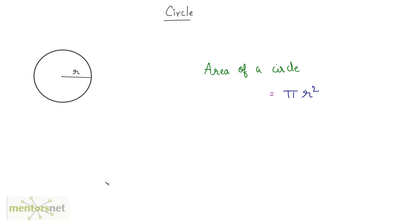So everybody knows the area of a circle and that's pi r square. Let us consider for simplicity purposes that the radius of this circle is 7 cm. So the area of this circle will be equal to pi times r square, that's 7 times 7.